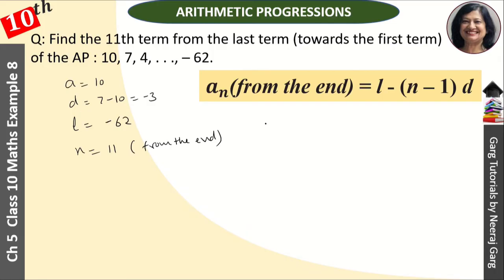So now we have to tell a11, that is equal to l minus (n minus 1)d, that is minus 62 minus (11 minus 1) times minus 3.